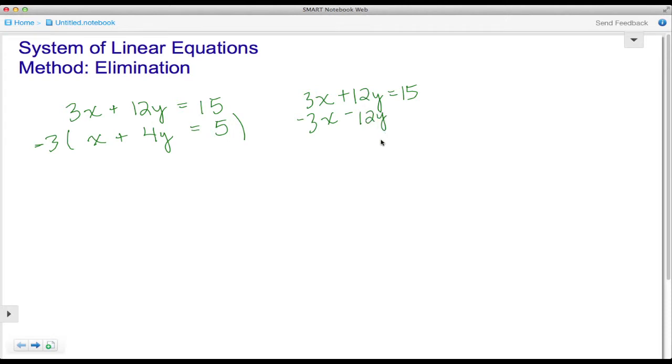And negative 3 times 5 gives negative 15. When I add these two equations together, we see that on the left everything becomes 0, and on the right everything becomes 0.